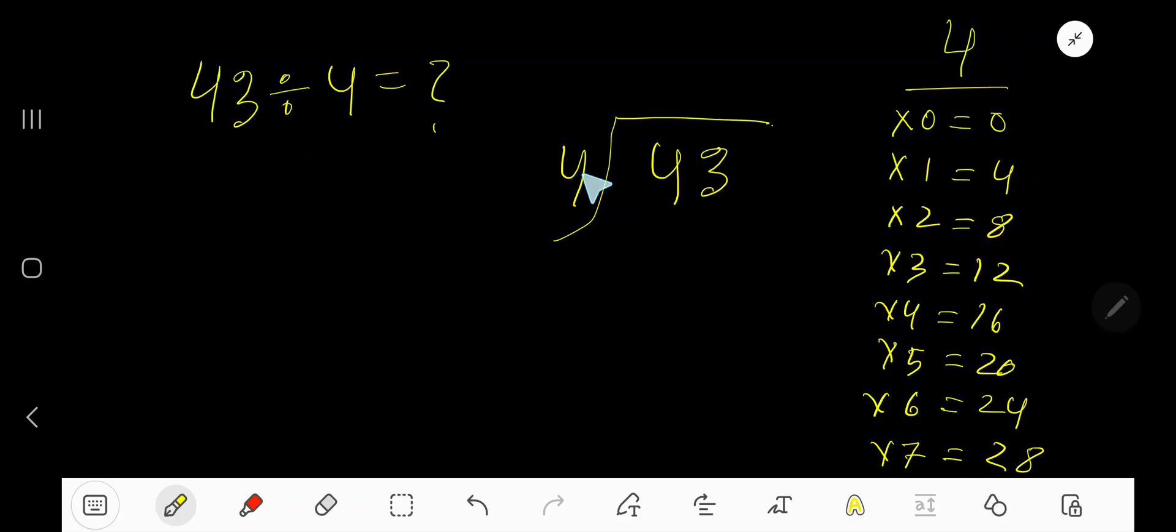43 divided by 4. Here 4 is a divisor, so we need the multiplication table of 4. 4 times 0 is 0, 4 times 1 is 4, 4 times 2 is 8, 4 times 3 is 12.